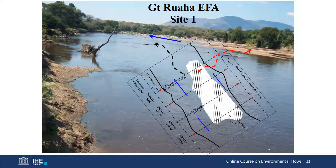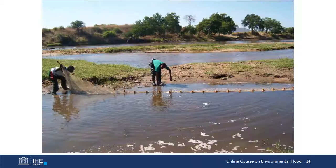Here's an example of the characterization of a particular site in the Ruaha River in Tanzania, giving an example of the kind of specific site on which detailed work would be done on fish, riparian vegetation, geomorphology, and so on. There's also some of the fish sampling being done at that site.